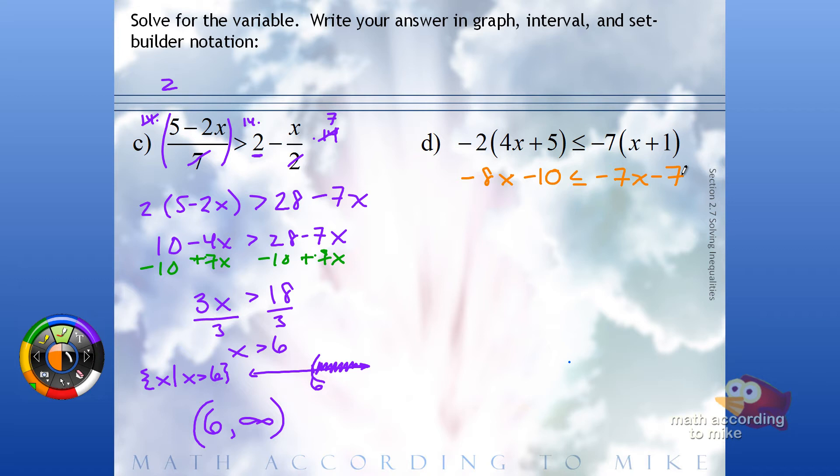Variable on the left, constant on the right. So we're going to add 7x. Add 10. We get negative x less than or equal to 3.